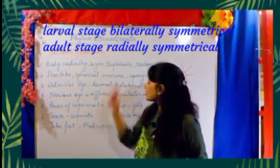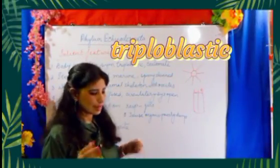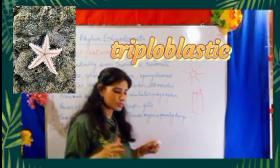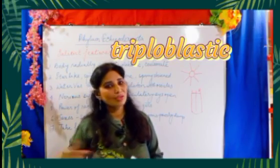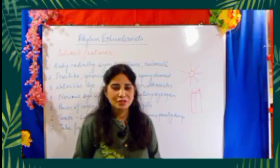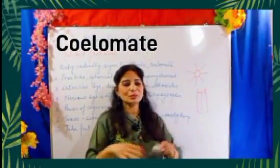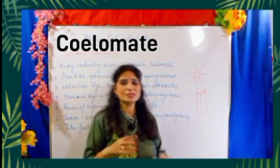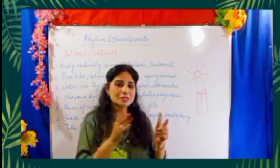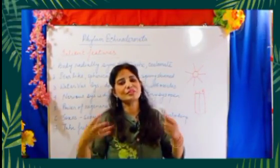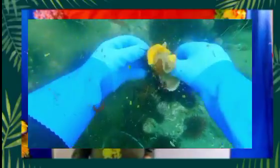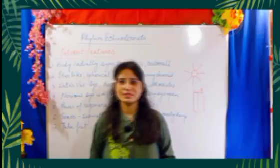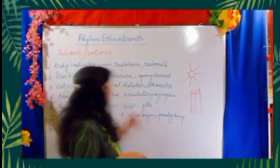The next feature is triploblastic. A triploblastic animal has three embryonic cell layers: the ectoderm (outward), the endoderm (inward), and the mesoderm (in between). Then comes the coelom — a body cavity that has a complete lining of peritoneum, which is derived from the mesoderm. So from the mesoderm, the peritoneum forms and lines the body cavity. This coelom feature is also found in Annelids.